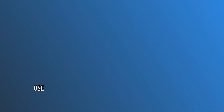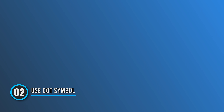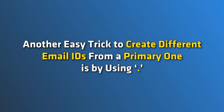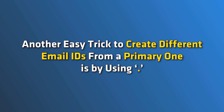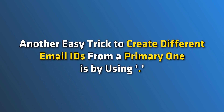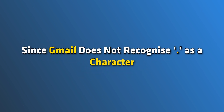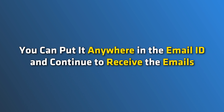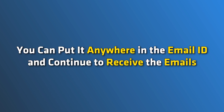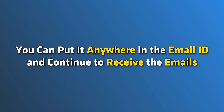Method 2: Using a dot to create multiple addresses from your primary address. Another easy trick to create different email IDs from a primary one is by using a dot. Since Gmail does not recognize the dot as a character, you can put it anywhere in the email ID and continue to receive the emails.